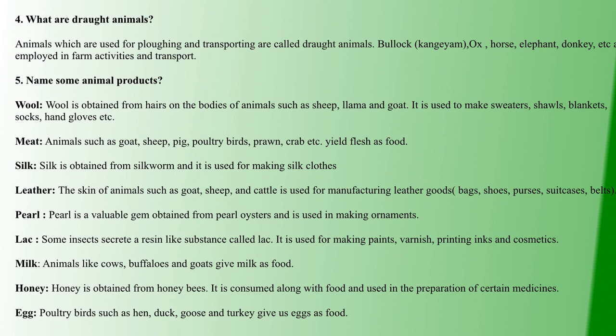Next animal product is meat, obtained from goat, sheep, pig, poultry birds, prawn, and crab — the flesh is processed for consumption. Then silk, produced by the silkworm, is used to make clothes.